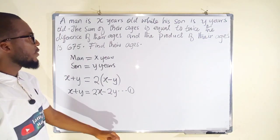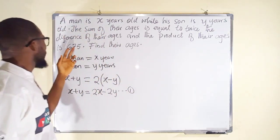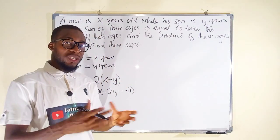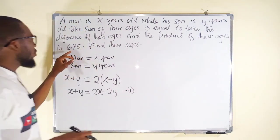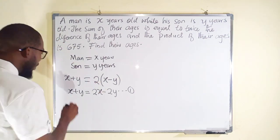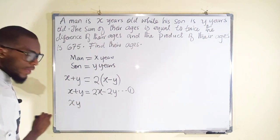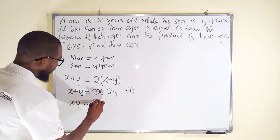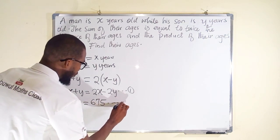Continuing, the question says the product of their ages is 675. Product means multiplication, so if we multiply their ages together we obtain 675. Therefore, x multiplied by y — that is, xy = 675. This is Equation 2.